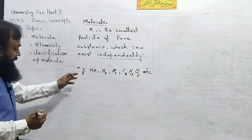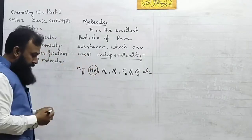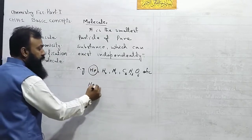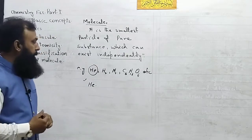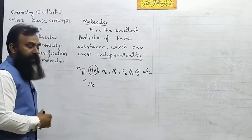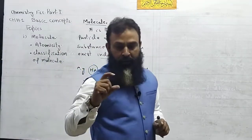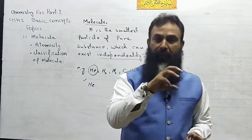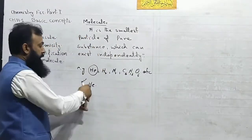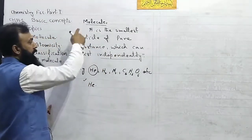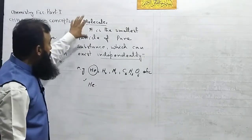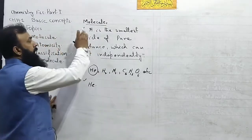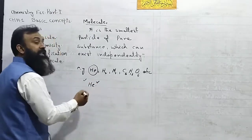Among these examples, one is a bit different. A question may arise in your mind that helium is an atom — so why have we discussed it under the definition of molecule? As I told you in the last lecture, whenever you want to check if something belongs to a particular category, apply its definition. If helium satisfies the definition of molecule, it belongs to that class. When we apply the definition of molecule to helium, we find that it can exist independently.